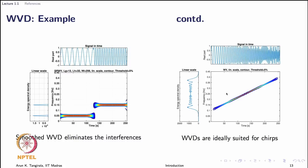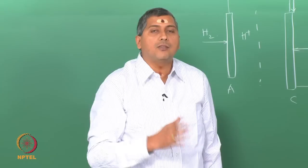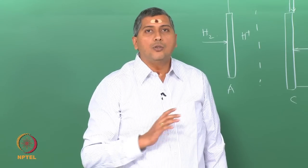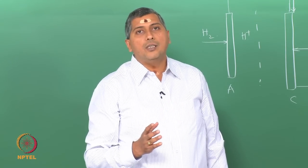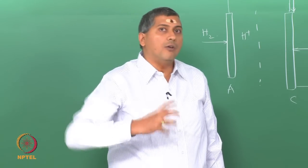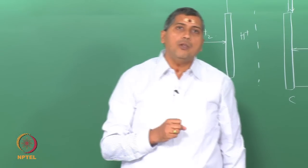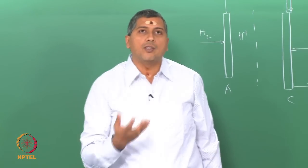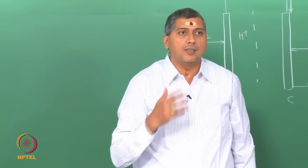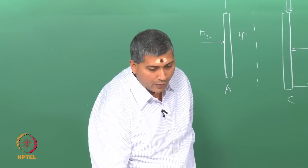For chirps, the original Wigner-Ville distribution without any modification works beautifully — it is in fact the best-suited tool for analysis of chirp-like features. This should tell you that you have to pick your tool based on the signal. That is the message you should take with you.